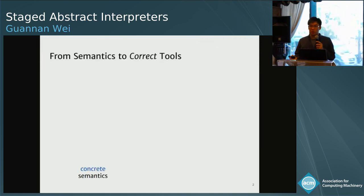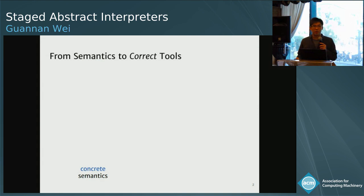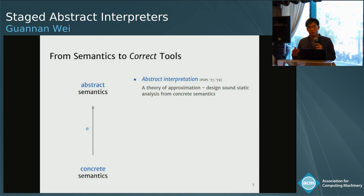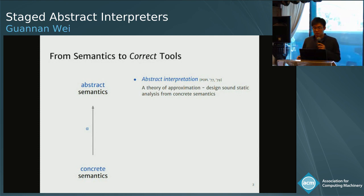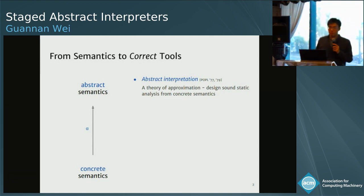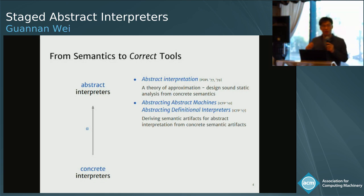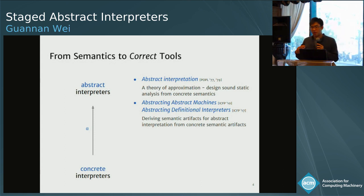When we build a tool for a programming language, semantics is the tool we use to describe behavior and reason about correctness. In terms of static analysis, abstract interpretation provides a theoretical foundation to approximate solutions of undecidable problems, so that we can design sound static analysis from a concrete semantics by applying several steps of abstractions. More recently, using the abstracting-abstract-machines approach and the abstracting-definitional approach, we can directly derive semantic artifacts for abstract interpretation from their concrete counterparts.